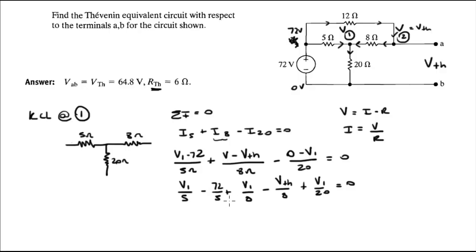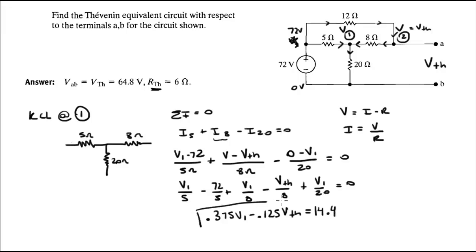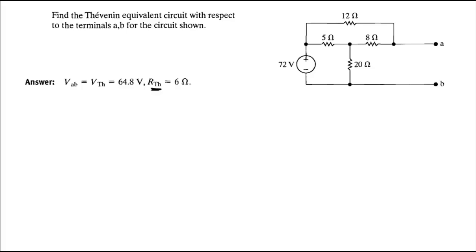Simplifying the KCL equation at node 1 gives: 0.375·V1 − 0.125·V2 = 14.4. This is Equation 1. Make a note of this equation.